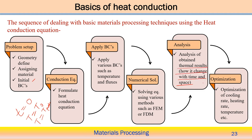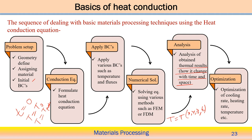Once we get the solution, we can analyze and obtain the thermal results — how temperature changes with time and space, the temperature at different positions, and how it varies with respect to time. Then we look into optimization: the optimization of cooling rate, heating rate, and temperature — at which point the heating rate is maximum, which part has the least cooling rate. We can do parametric analysis to get optimized results by changing input parameters and redoing all steps to get different results, from which we find the optimum result.